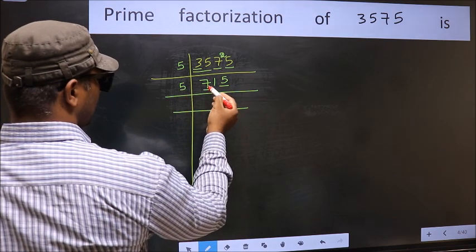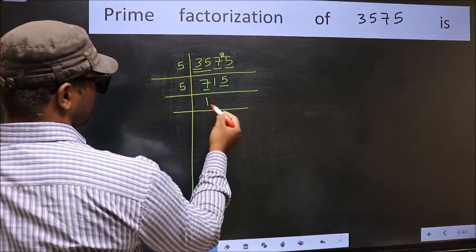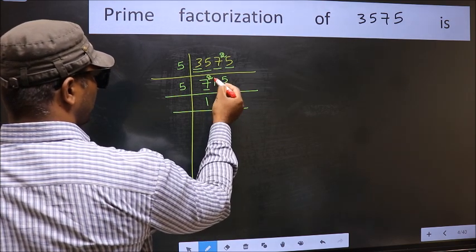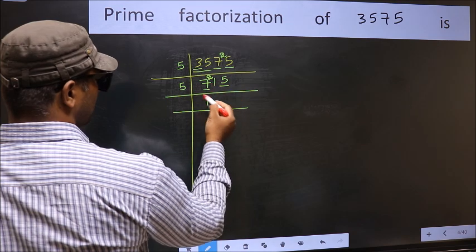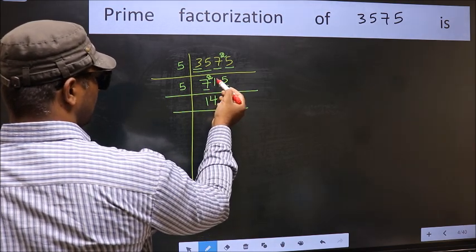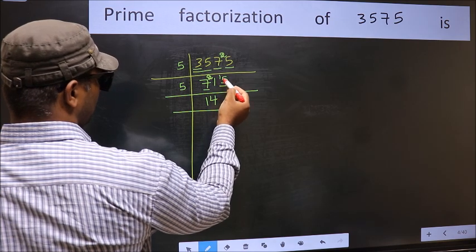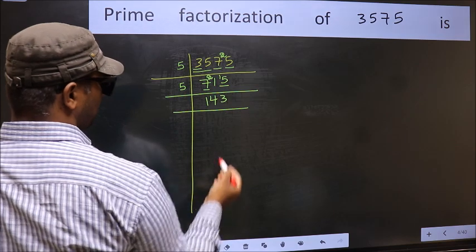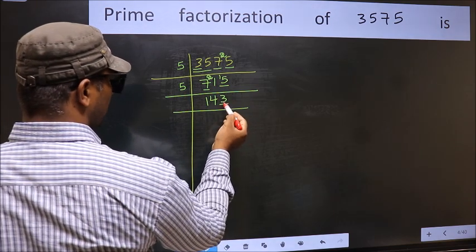Now the last digit 5, so take 5. First number 7. A number close to 7 in the 5 table is 5 times 1 is 5. 7 minus 5 is 2. Carry it forward 21. A number close to 21 in the 5 table is 5 times 4 is 20. 21 minus 20 is 1. Carry it forward 15. When do we get 15 in the 5 table? 5 times 3 is 15.